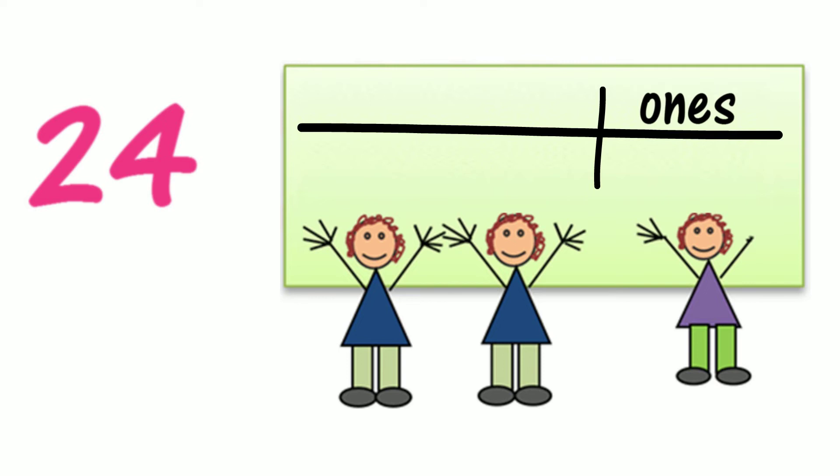Where do the tens go? Do the tens go on the left? Let's record our two tens in the tens column, and let's record our four ones in the ones column.